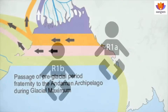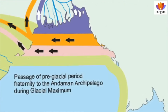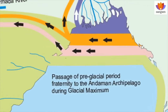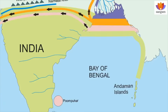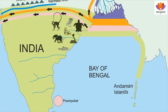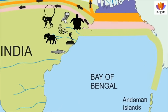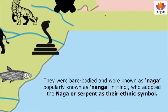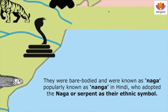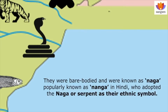As the sea water gradually rose during the interglacial period, this coastal landmass submerged, displacing the settled population. They settled on the Bengal coast and adopted various animal symbols as their ethnic identity. To begin with, they were bare-bodied and were known as Naga, popularly known as Nanga in Hindi, who adopted the Naga or serpent as their ethnic symbol.